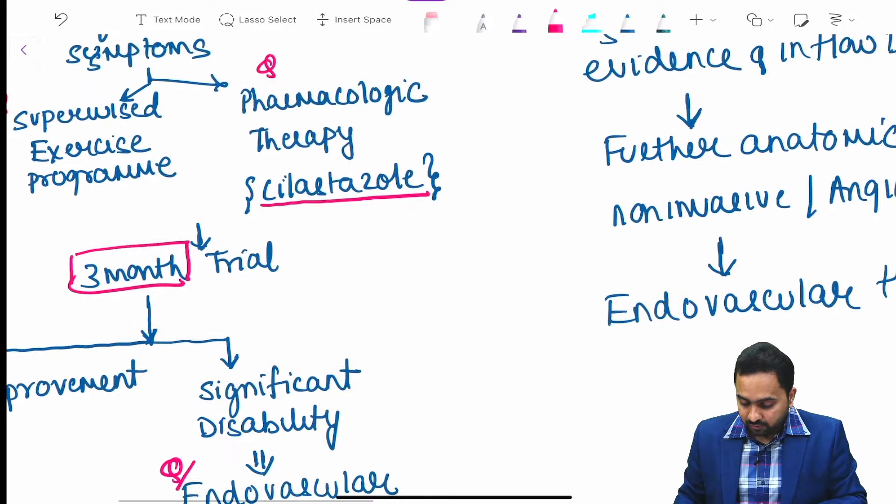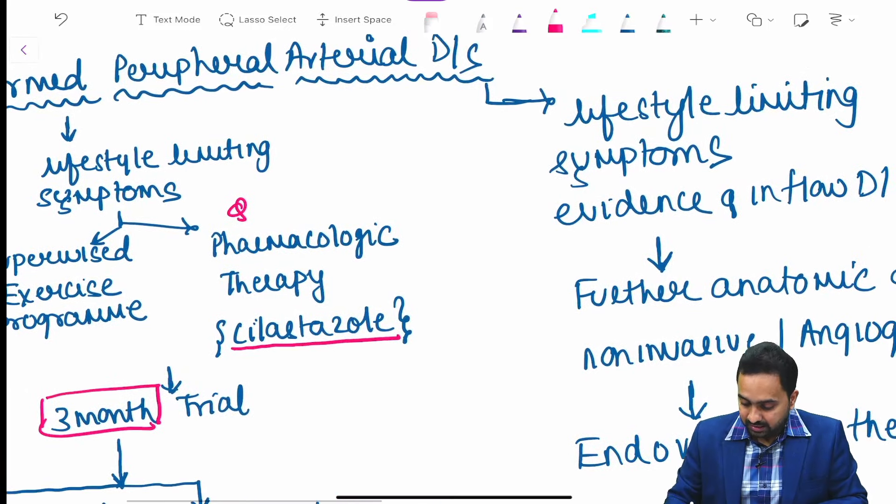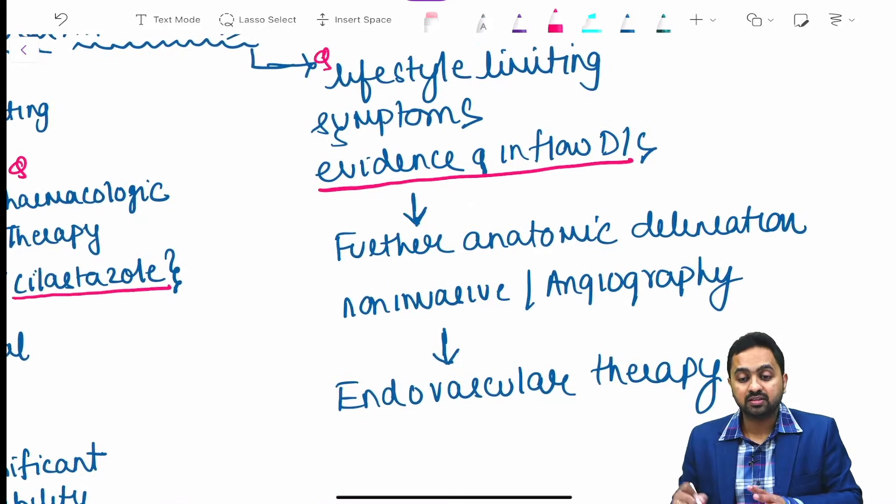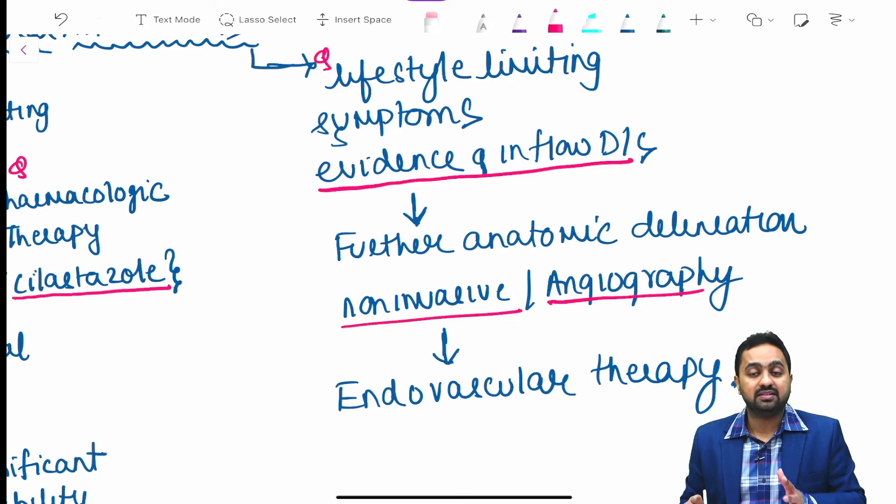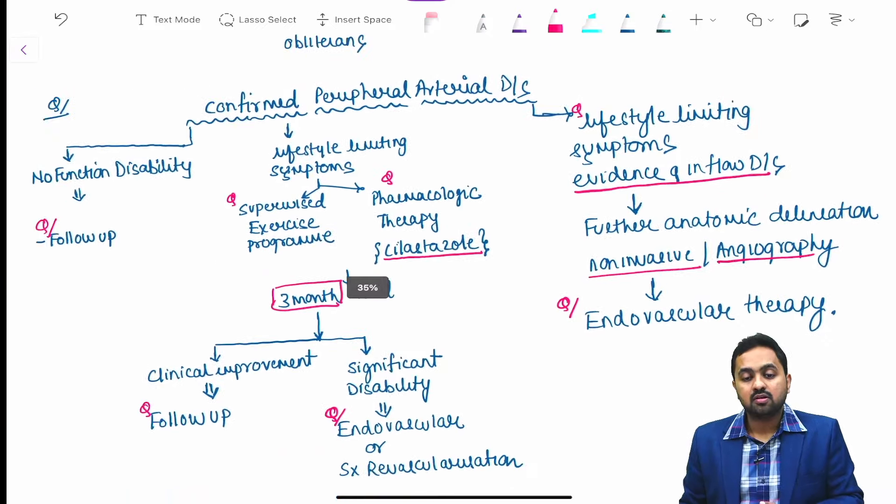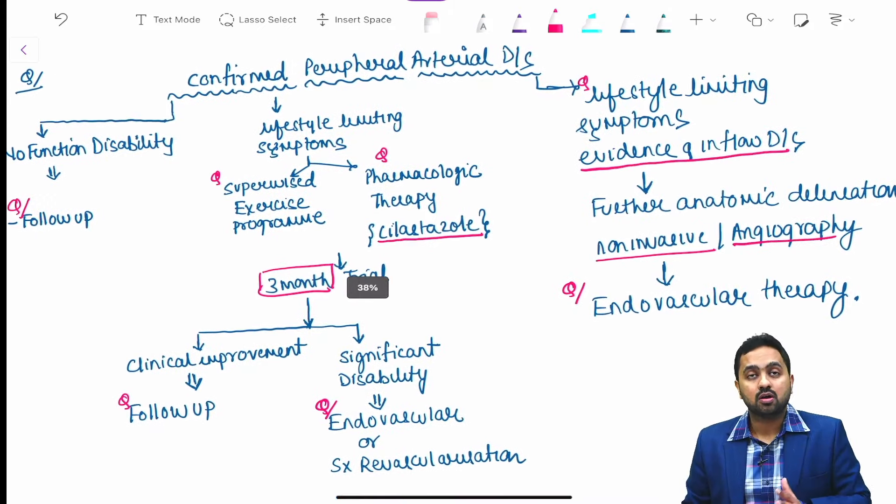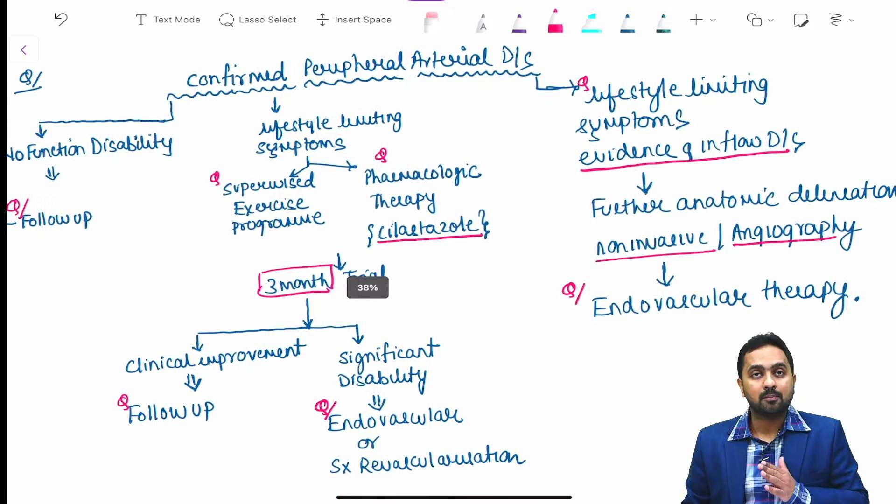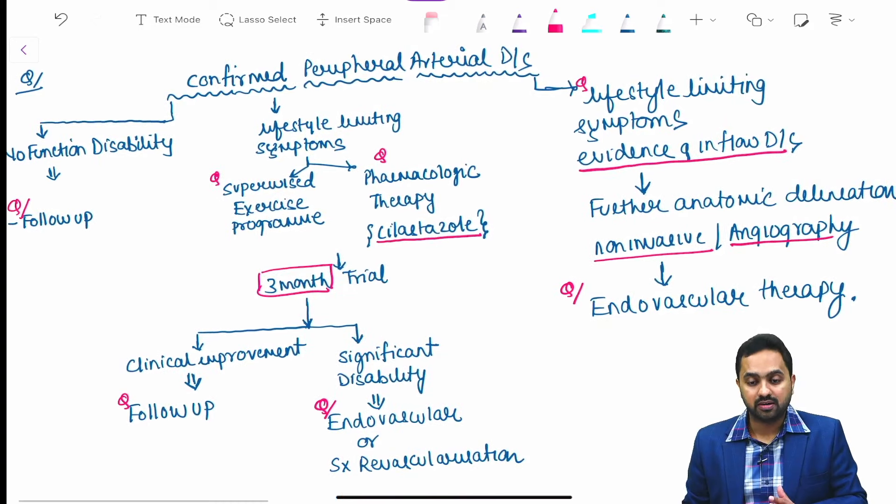If you have life-limiting symptoms with evidence of inflow disease, further anatomic delineation in form of angiography and other non-invasive techniques needs to be done and the patient might need endovascular therapy. This flow chart will help you solve questions regarding management of peripheral arterial disease.